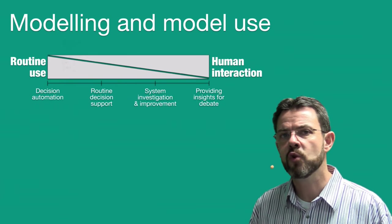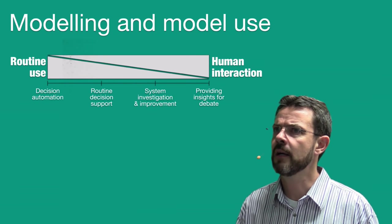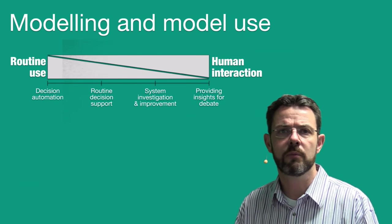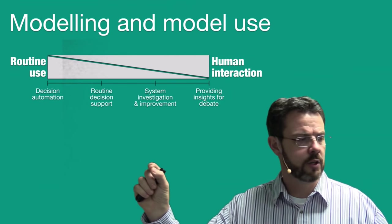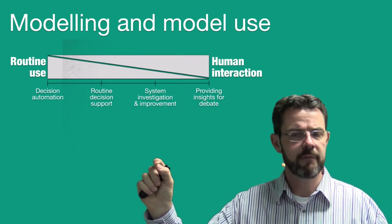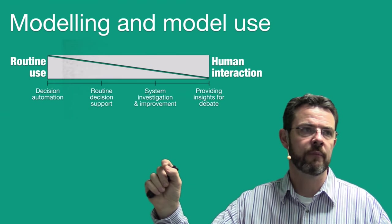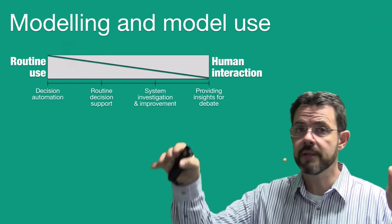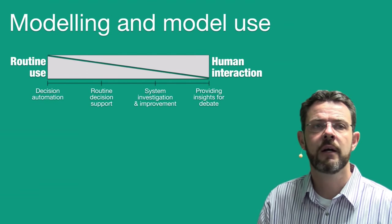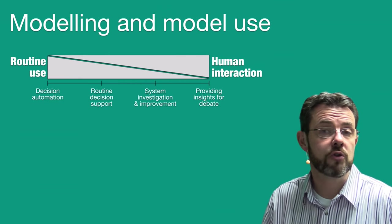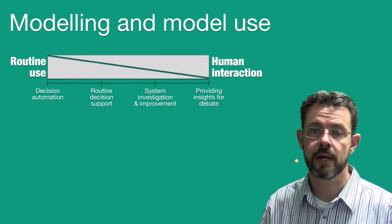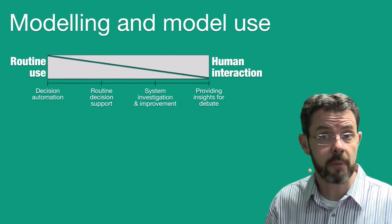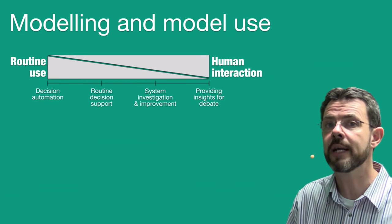Now, when we look at decision automation, that might be something like logging onto Google Maps and say, I want to travel from A to B and give me the route using my car. And lo and behold, it automatically, without anybody behind the scenes intervening, it will provide you with a route to travel between those two points. As a matter of fact, it will provide you probably with a couple of alternatives. But nobody intervened. It's fully automated.